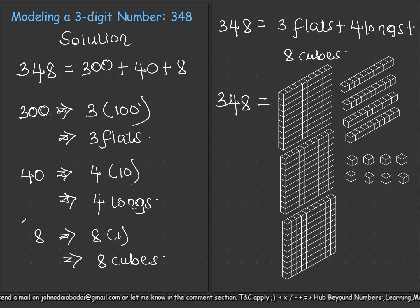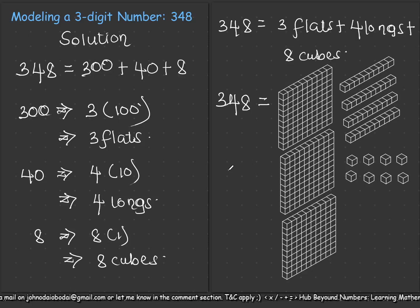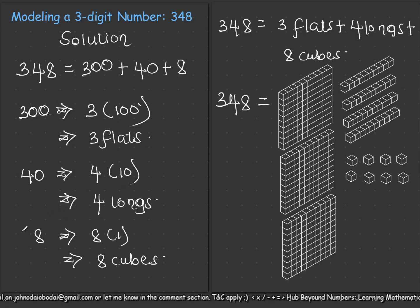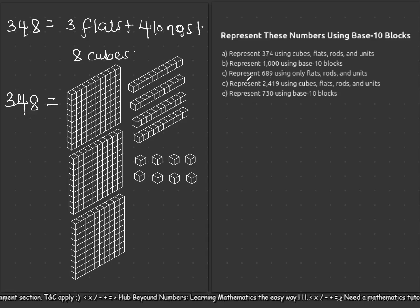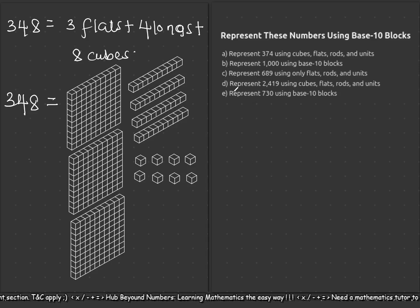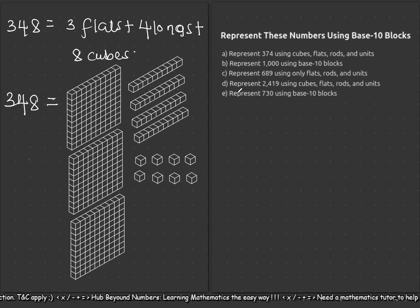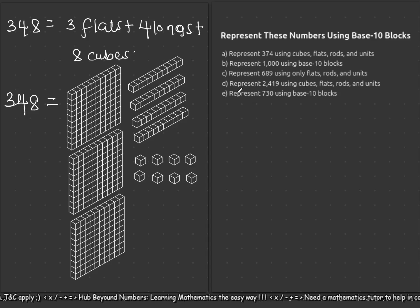I'll leave some exercises for you to try to test your understanding. If there's any issue, let me know in the comments. You'll need a pencil, a pen, a sheet of paper, and a ruler to draw your multi-block diagrams. Represent these numbers using base-10 blocks: 374, 1000, 689, 2419, and 730. I hope this lesson was helpful — see you in the next lesson, stay blessed, bye for now.